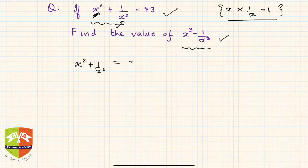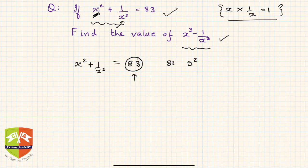Now if you see, this 83 is closer to 81, which is 9². That itself is an indication that you reduce it to a perfect square. So x² + 1/x² can be written as 81 + 2.